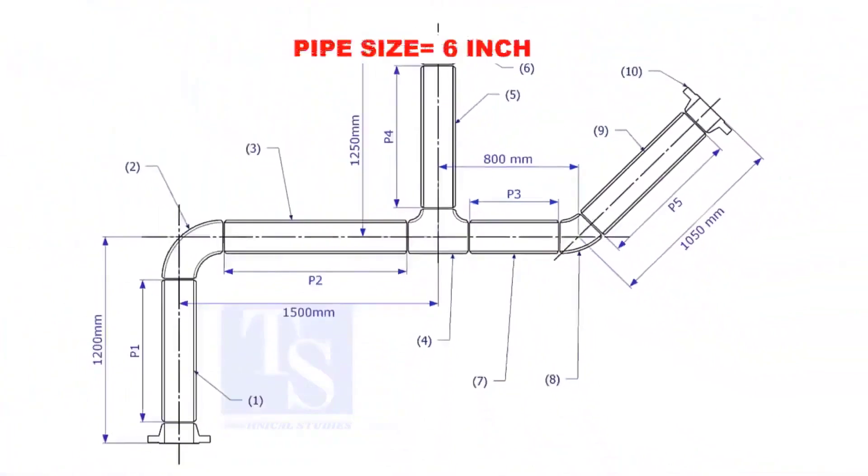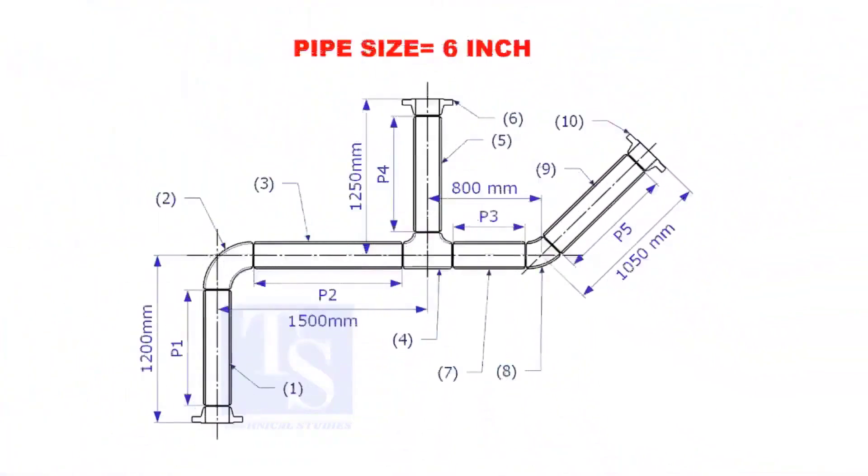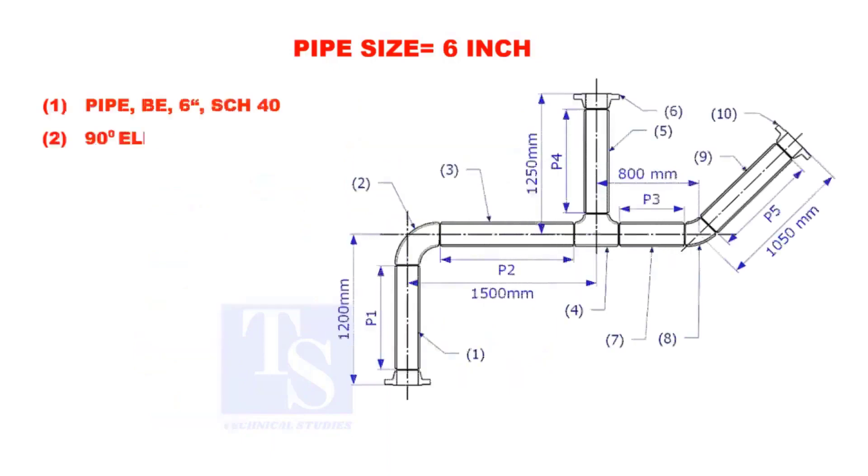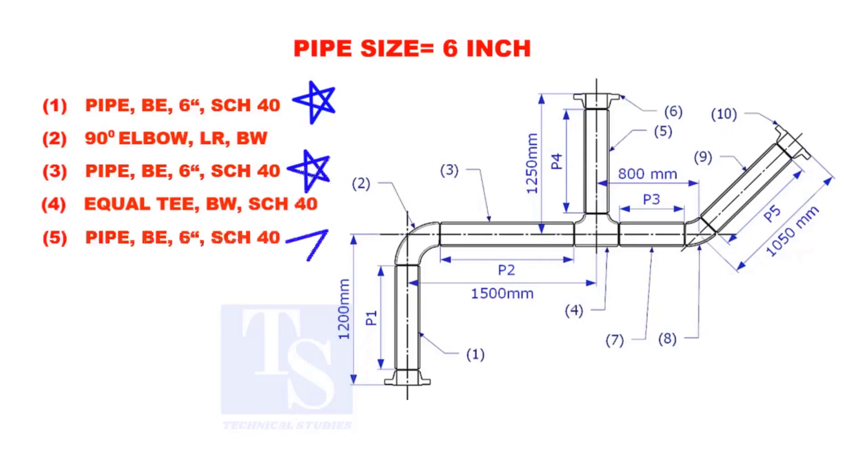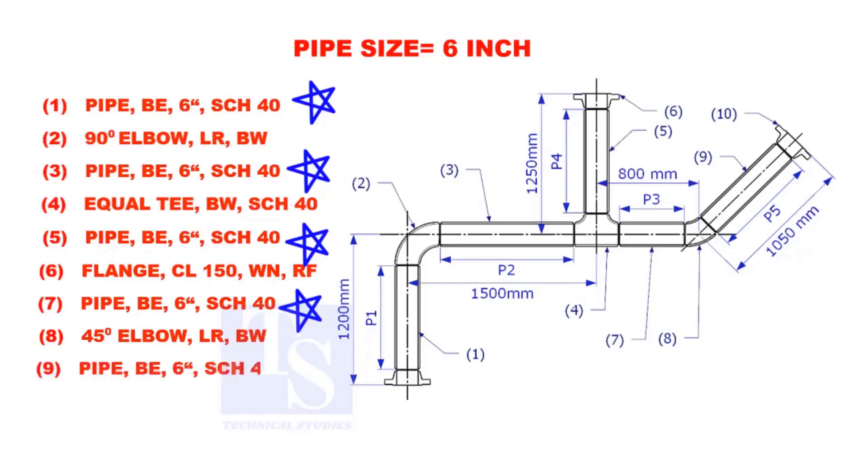Assume that the pipe size is 6 inches. Item numbers 1, 3, 5, 7, and 9 are pipes.